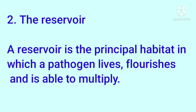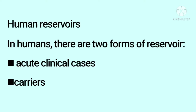Reservoir. Reservoir is the principal habitat in which a pathogen lives, flourishes, and is able to multiply. We have three types of reservoir. The first one is Human Reservoir. Human Reservoir has two types: acute clinical cases and carriers. Clinical cases involve all active infections.